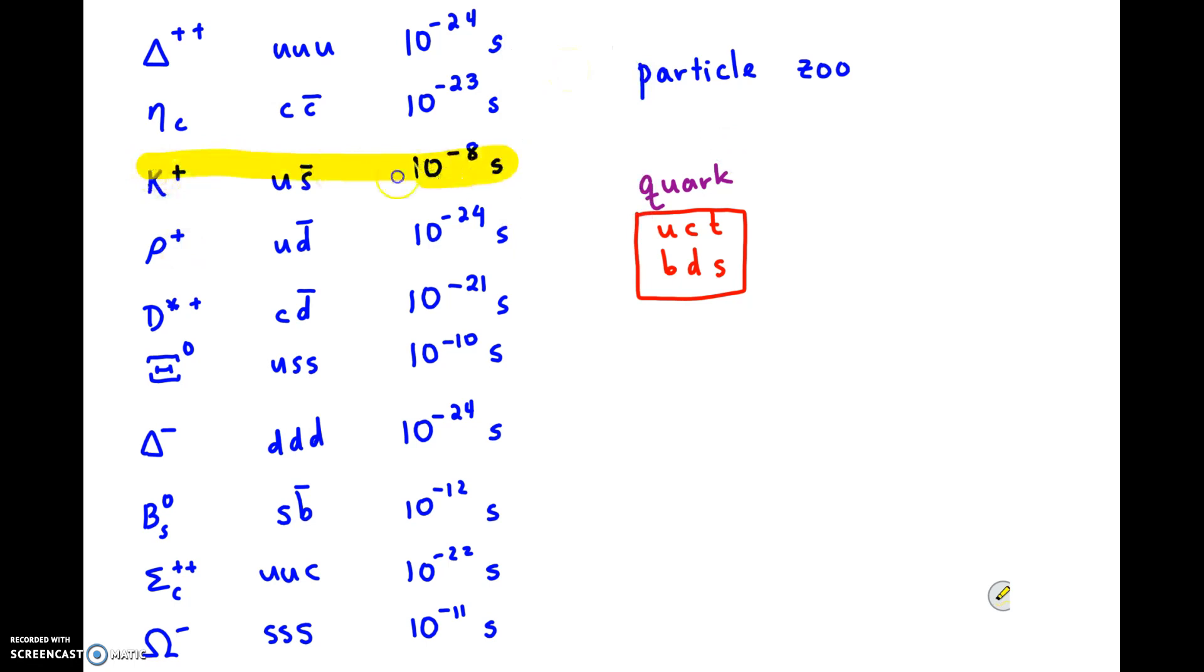This one lasts for a lengthy 10 to the negative 8 seconds. This one here lasts for 10 to the negative 10. This one lasts still pretty long compared to the others, 10 to the negative 12, 10 to the negative 11. Look at how much longer those ones last. They decay way slower. Why do those particles decay so slowly and the others decay so quickly? It's kind of strange, don't you think?